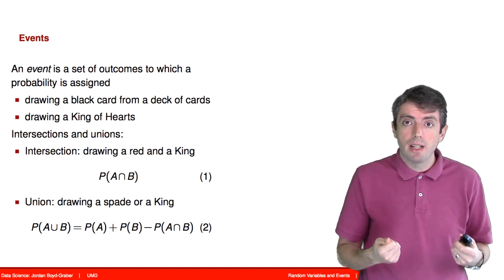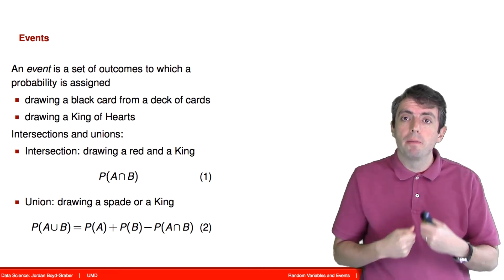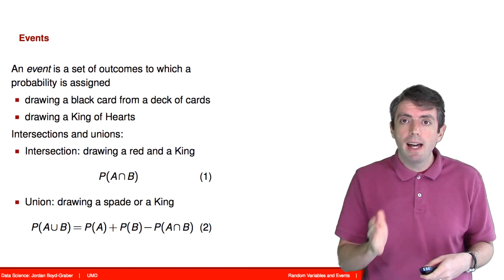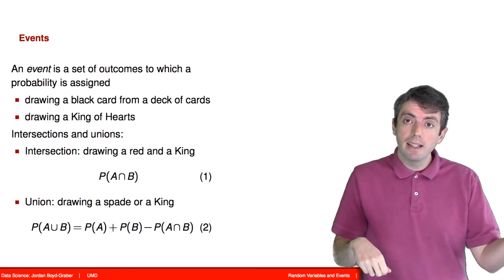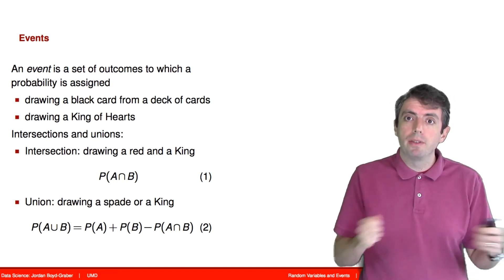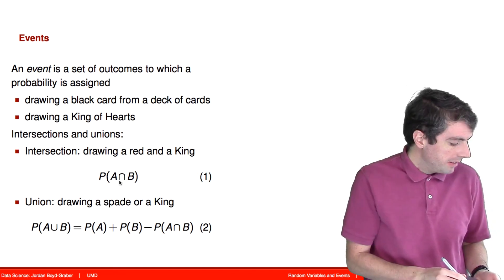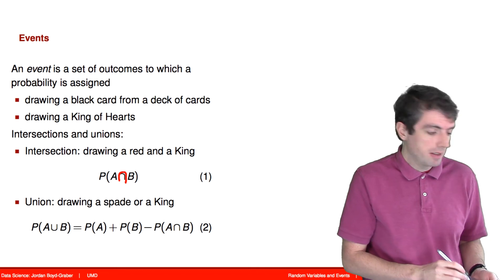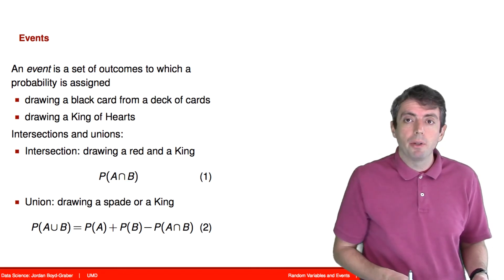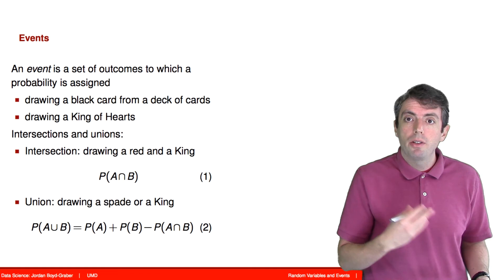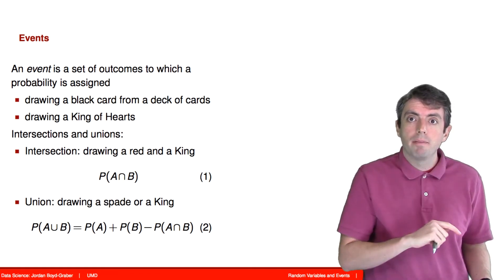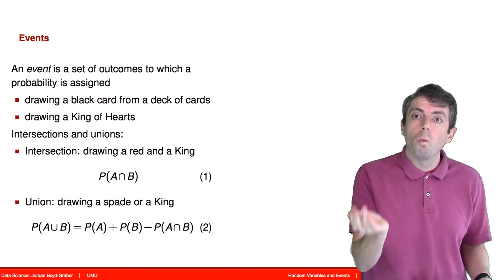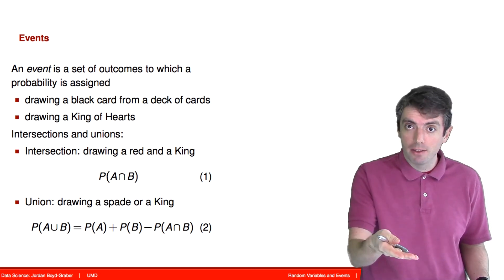So an intersection is when you take two different things and you want both of them to be true. So for example, if we talk about drawing a red king, that is the intersection of two events. Drawing a king and drawing a red card. We want both of those things to be true. We will signify that using this upside down U character to signify the intersection of those two events. The other common operation that we'll talk about is the union. And so the union is you take two events and either one of them could be true. So for example, if you draw a spade or a king, we don't want both of those to be true, a king of spades. We want a card that is either a king or a spade.